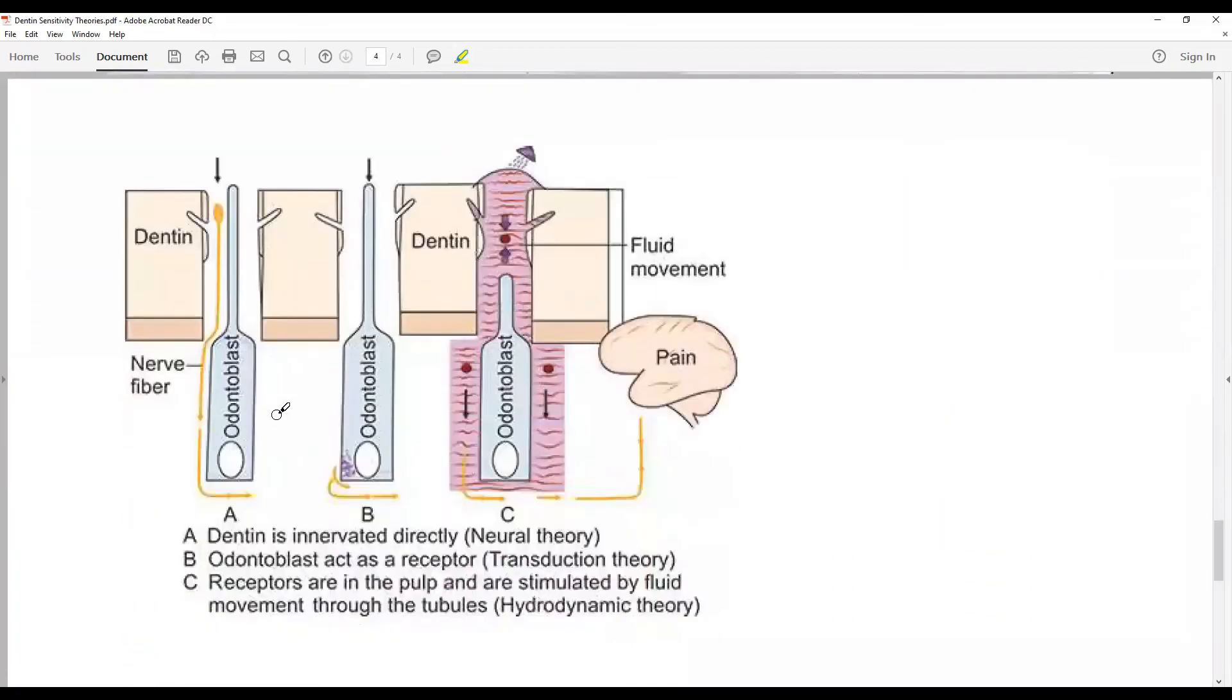So this diagram shows the direct neural theory, odontoblasts acting as receptors, and fluid movements—the dental lymph. The crux is the term dental lymph. So that brings us to an end to the discussion on the theories explaining the hypersensitivity of dentin.